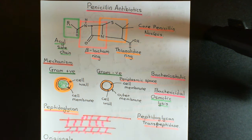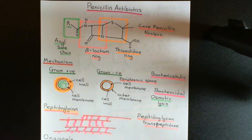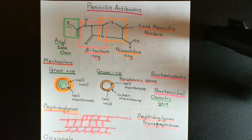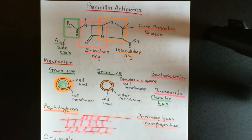Welcome back to this next video in which we are discussing penicillin antibiotics. In the previous video we discussed the core penicillin structure which all penicillin antibiotics possess, and the mechanism by which all penicillin antibiotics achieve their bactericidal effect on bacterial species which have a peptidoglycan cell wall. In this video I want to turn my attention to looking at the different examples of penicillin antibiotics.